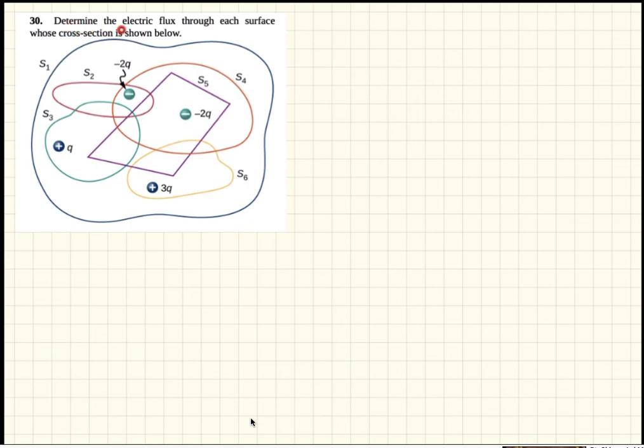This problem: Determine the electric flux through each surface whose cross-section is shown below. So these are all enclosed Gaussian surfaces.